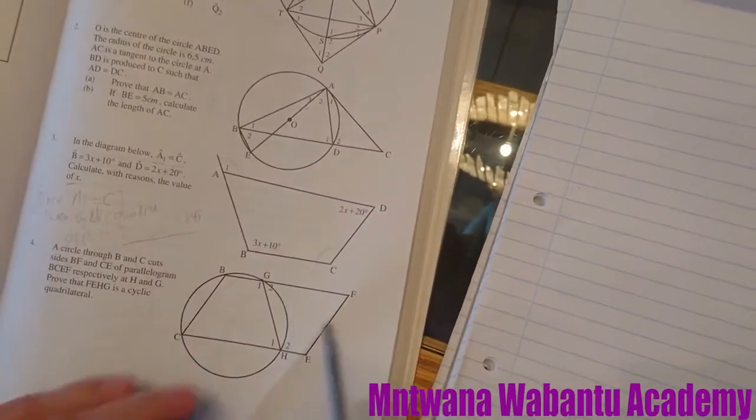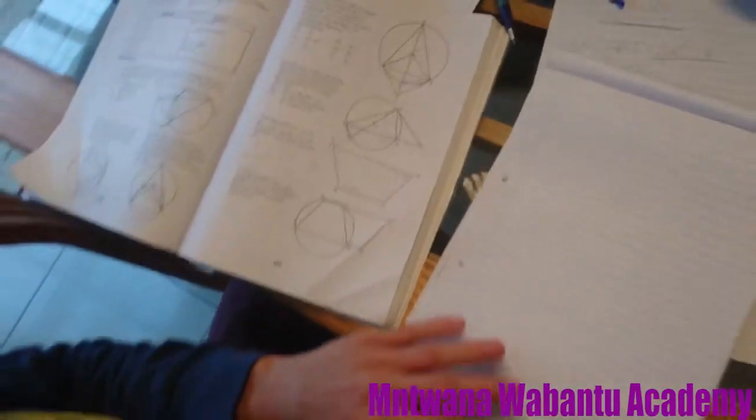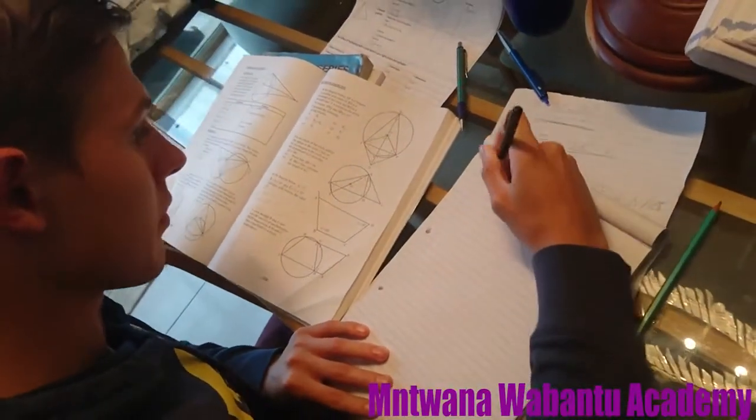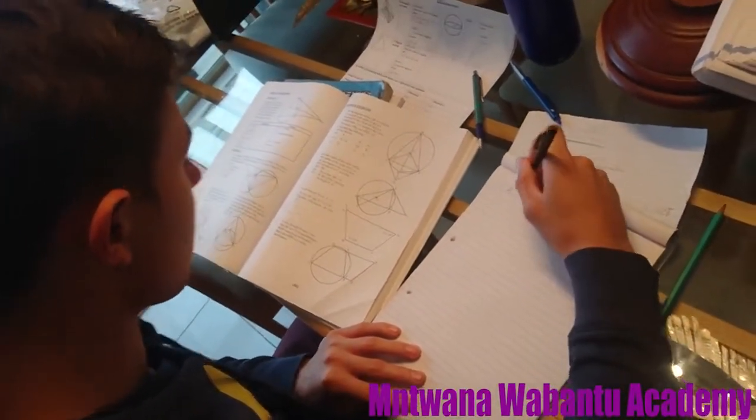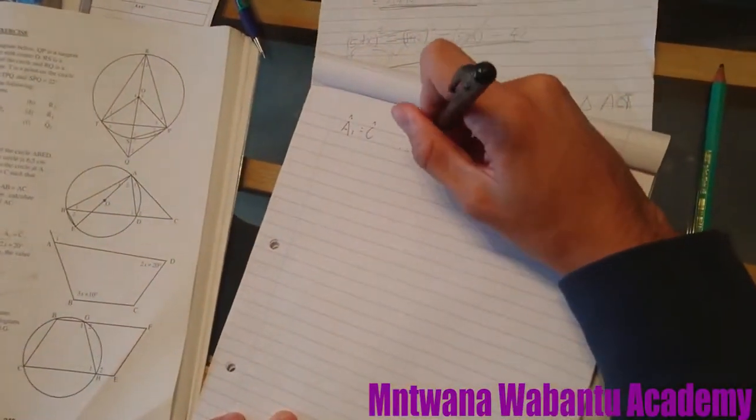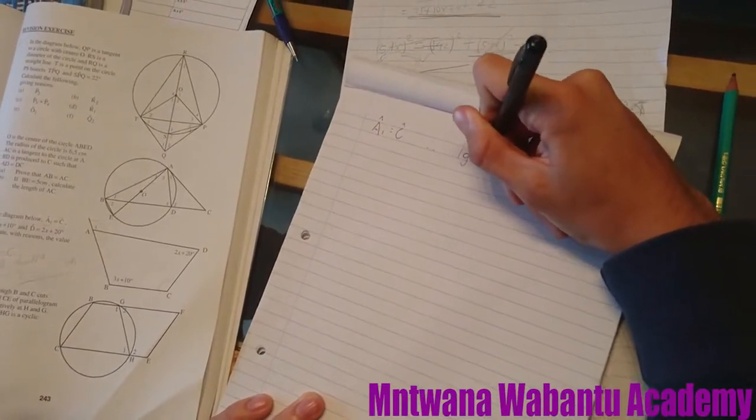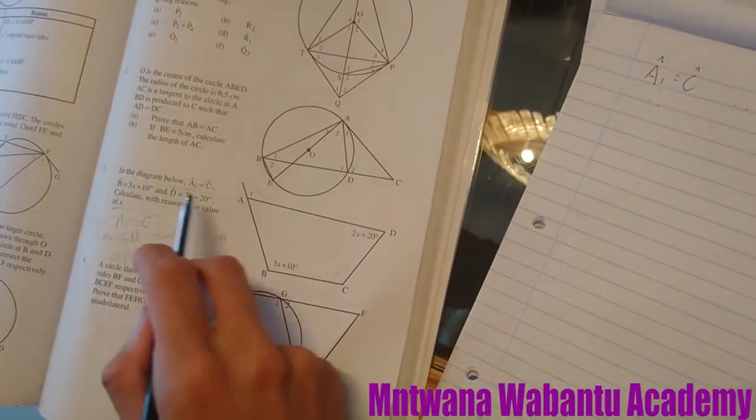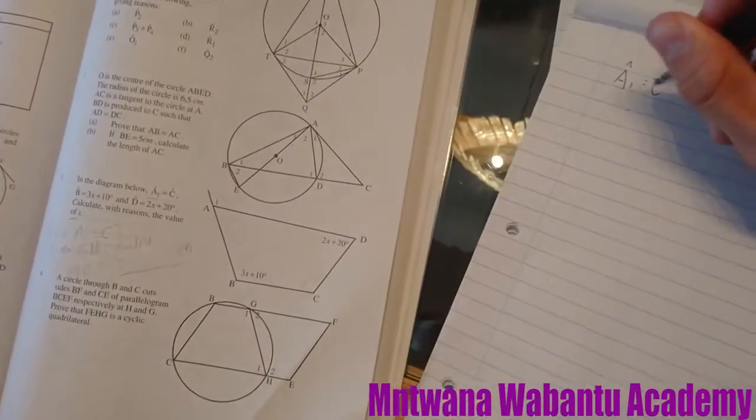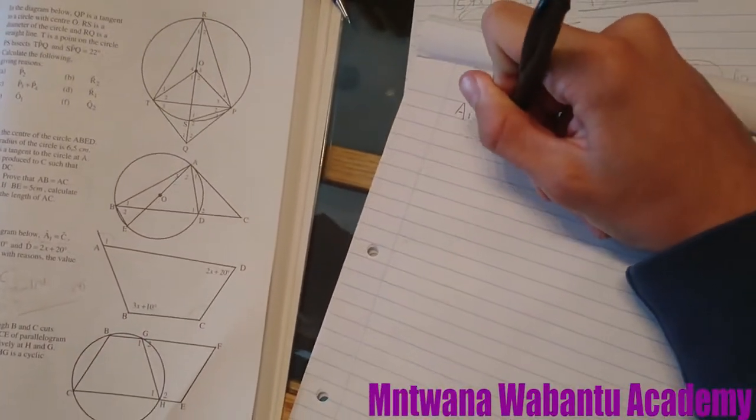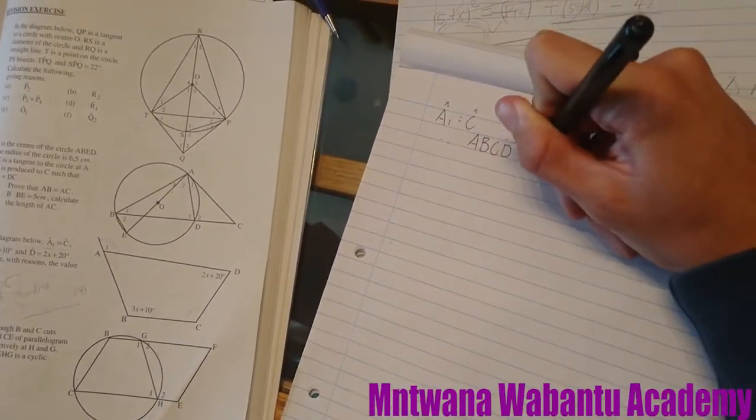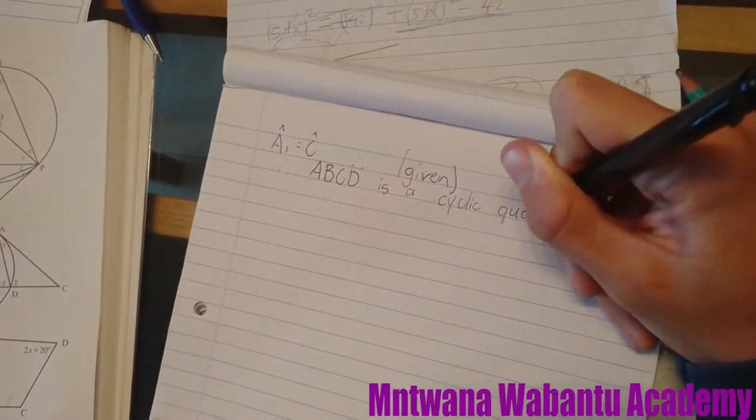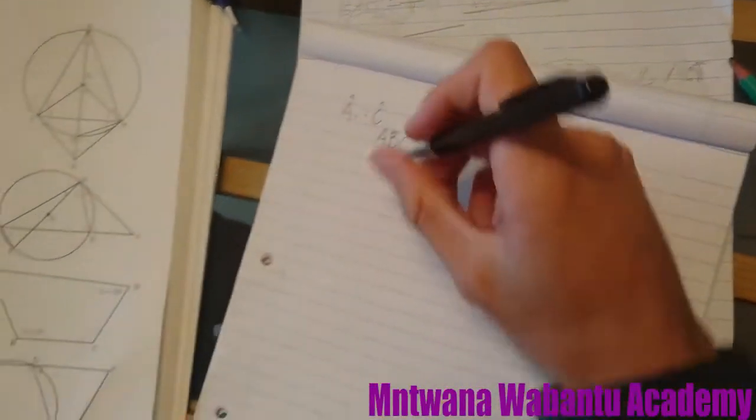So surely if angle A1 is equal to angle C1, therefore with reason that it's given, therefore ABCD is a cyclic quad.